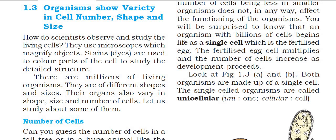There are millions of living organisms around us. They are of different shapes and sizes. Their organs also vary in shape, size, and number of cells. Let us study about some of them — cells also differ in size, shape, and number.